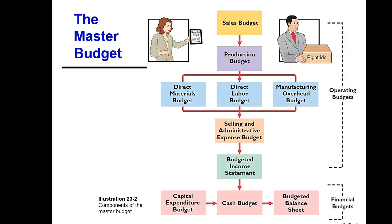Let's take a look at a master budget. The budgets you see — sales, production, material, labor, overhead, and selling and administrative expense budgets — are all used to prepare your budgeted income statement. These are our operating budgets. For the financial budget, we're going to have the capital expenditure budget, our cash budget, and our budgeted balance sheet. When you combine these budgets all together, they're known as the master budget.